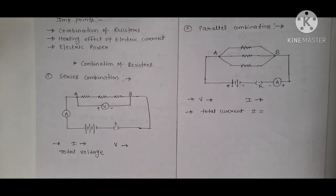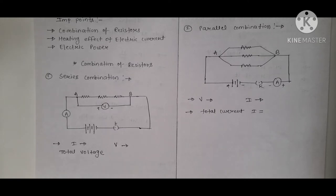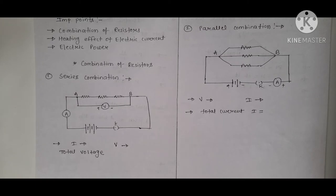Before we start, let's recall the previous lecture. We discussed electric charge, electric current, electric potential, and Ohm's law. Electric charge refers to fundamental particles — positive as well as negative. Electric current is the rate of flow of charges. Electric potential is work done per unit charge: V = W/Q. Ohm's law states V = IR, where R is resistance — the property of a material that opposes current flow.